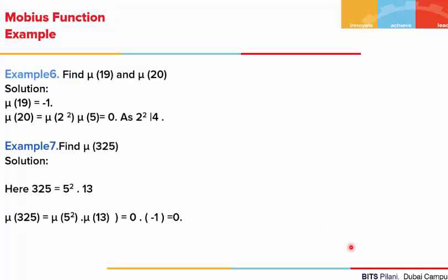Let's look at some examples. If we are asked to find mu(19) and mu(20): mu(19) = −1 as 19 is a single prime. For mu(20), we write 20 = 2^2 × 5. Then mu(20) = mu(2^2) × mu(5). Since mu(2^2) = 0 because 2^2 is divisible by 2^2, the whole value is 0. For mu(325): we write 325 = 5^2 × 13. Then mu(325) = mu(5^2) × mu(13). Since mu(5^2) = 0, the whole value becomes 0.